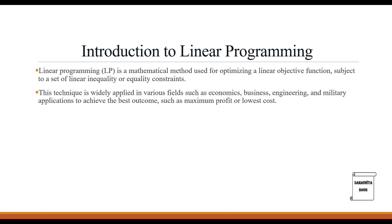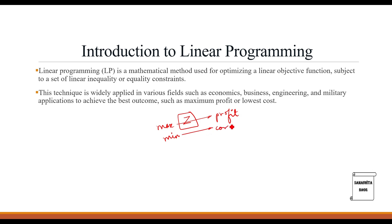Linear programming is very important in operations research. When we talk about linear programming, what we are trying to do is optimize an objective function which we label as Z. This Z is what we try to either maximize or minimize. Maximization is always related to profit — you will obviously maximize profit for your organization — and when talking about cost, you would always want to minimize it.